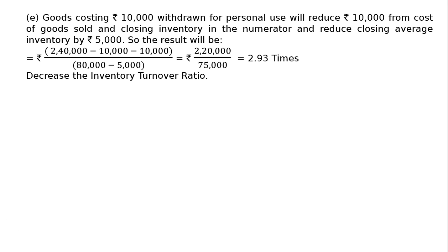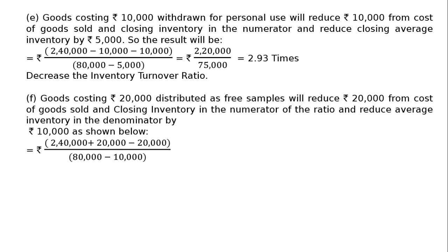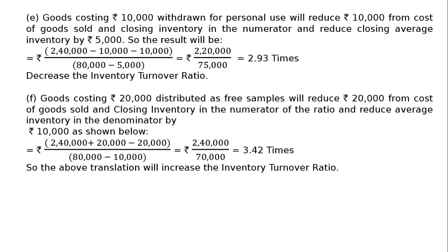Part F: goods costing rupees 20,000 distributed as free samples. This reduces cost of goods sold and closing inventory each by 20,000 in the numerator, keeping it at 2,40,000. The average inventory in the denominator reduces by rupees 10,000, giving 80,000 minus 10,000 equals 70,000. The new ratio is 2,40,000 divided by 70,000 equals 3.42 times, which is higher than the original 3 times, so Part F increases the inventory turnover ratio.